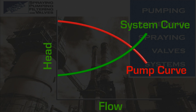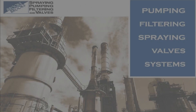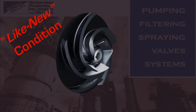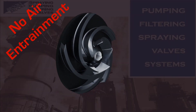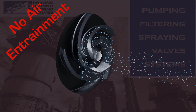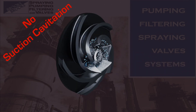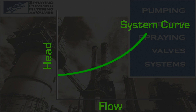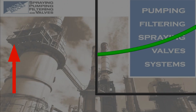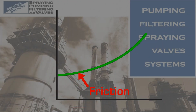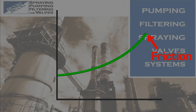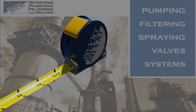Where this curve intersects the pump curve is where the pump should operate. This assumes the pump is in like-new condition, there is no air entrainment, and the pump is not suction cavitating. To develop the system curve, we need to know only two values: the static head and the frictional losses.